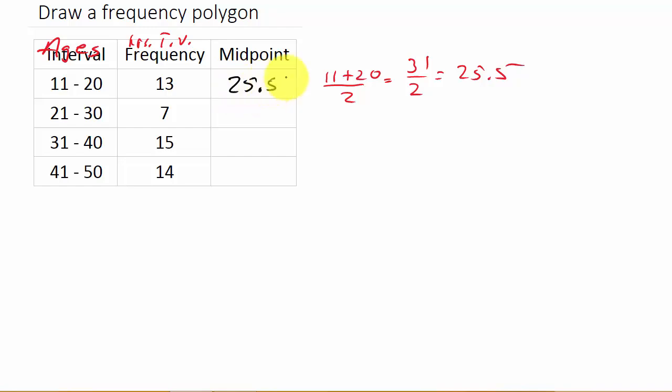So 25.5 would be the midpoint of this interval. And then we would do these intervals the same. You would do 21 plus 30, divide that by 2. Well, that would give you, I'm sorry, it's not 25.5, that would be 15.5. And this one would be 25.5. Okay. So this would be 15.5. Okay. Alright, and then for the next interval, we would get a midpoint of 35.5, and the next interval, 45.5.